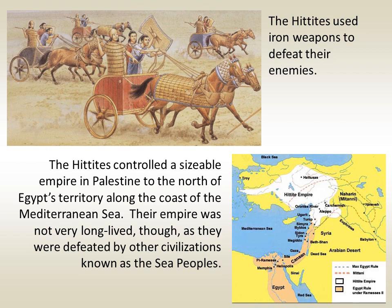The Hittites used iron weapons to defeat their enemies. They controlled a sizable empire in Palestine to the north of Egypt's territory along the coast of the Mediterranean Sea. Their empire was not very long-lived, however, as they were defeated by other civilizations known as the Sea Peoples.